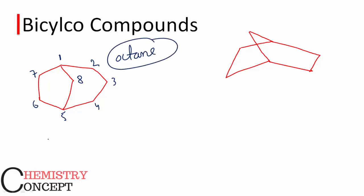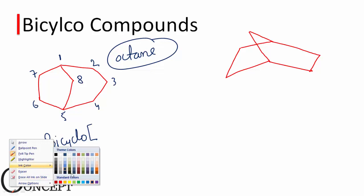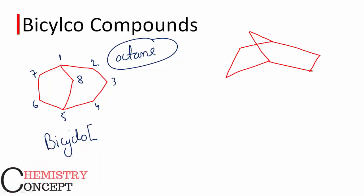But the name of bicyclo compounds starts with the term 'bicyclo' irrespective of the base name. Just as for cyclic compounds we use the term 'cyclo,' for compounds with two rings we use 'bicyclo.' Again, there are two rings fused together, because of which three different parts of a bicyclo compound are generated.